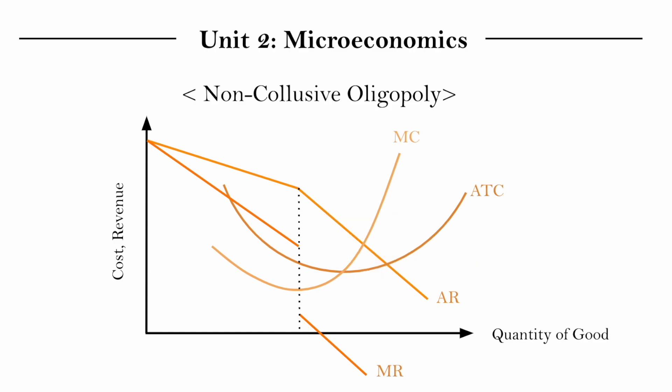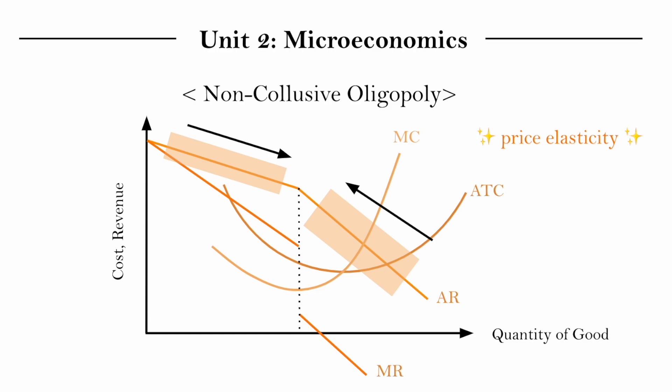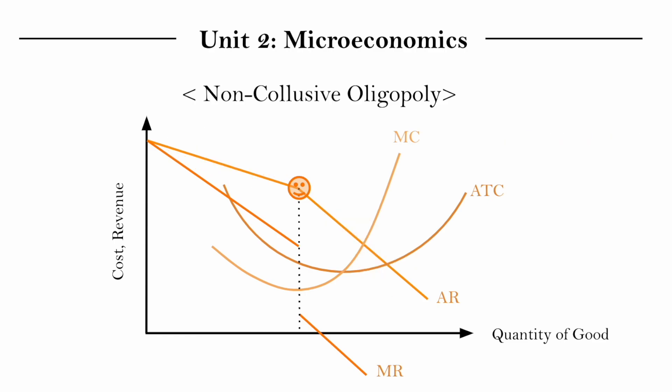Considering what you want to do on either side of the curve — on the right side you want to go up, and on the left side you want to go down, both because of price elasticity — we will naturally end up at this point, which you probably suspected was important from the very beginning. So a non-collusive oligopoly firm would want to produce here.